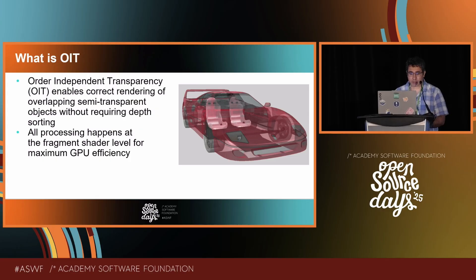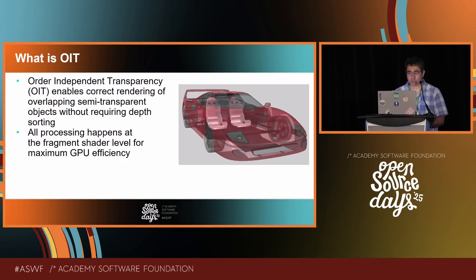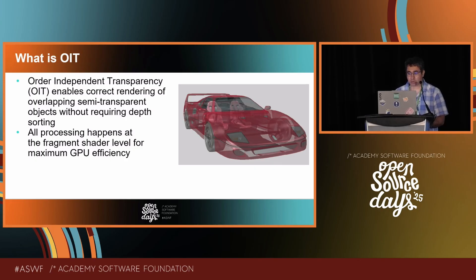So what is order-independent transparency? The idea is that you want to solve the multiple semi-transparent object blending problem without doing sorting on the CPU — at least not while moving the camera. You want any sorting to be done in the fragment shader and use the GPU as efficiently as possible. Here is an example on the right: something is clearly off with this transparent car because without OIT, without the correct blending order, you just blend things randomly as they come in, but this is what the correct result should look like.